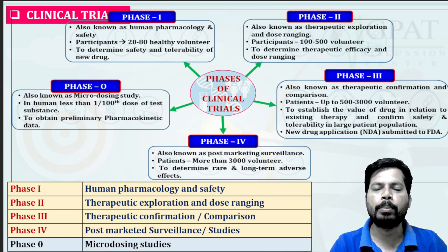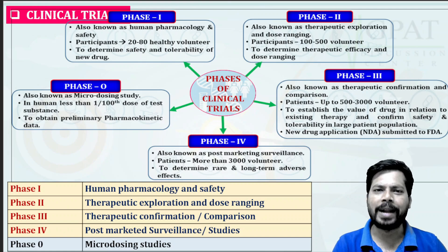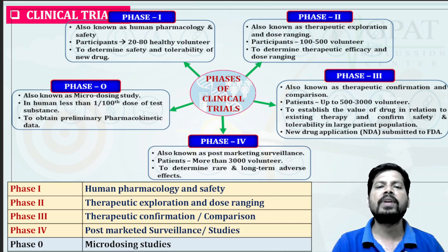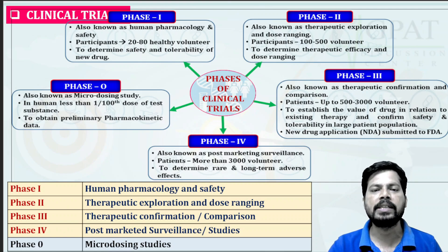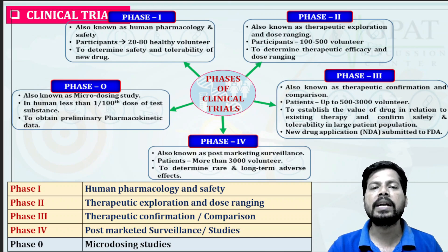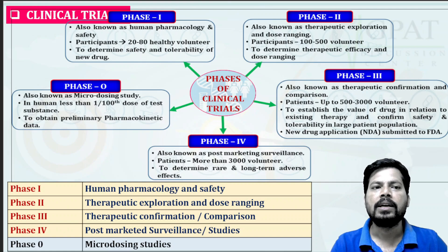In drug development and discovery, first we have to identify a drug — it may be from a plant source, animal source, chemical source, or marine source. After identification of a particular drug, we go for pre-clinical trials, and after completion of pre-clinical trials, if we are satisfied, we move from pre-clinical trials in animals to clinical trials in human beings.